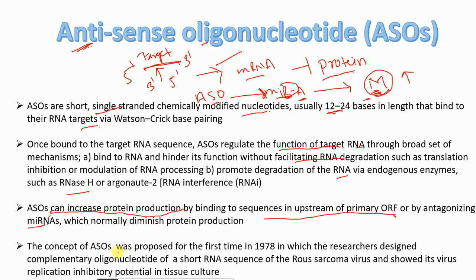Briefly on the history of antisense oligonucleotides: they were first proposed in 1978, when researchers designed complementary oligonucleotides to a short RNA sequence of Rous sarcoma virus and showed their replication-inhibitory potential in tissue culture. This was the first demonstration that complementary sequences could inhibit the replication of a virus.